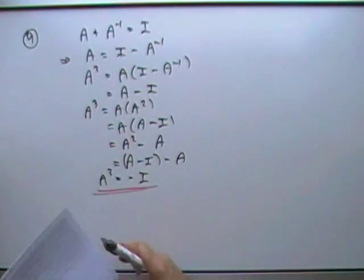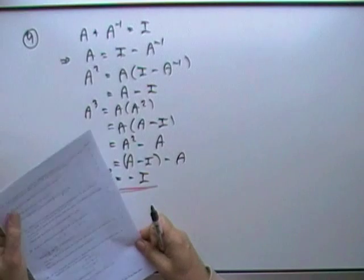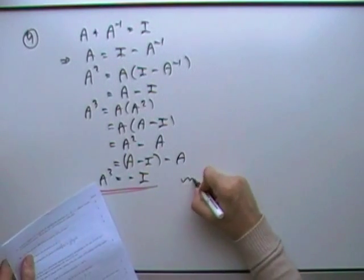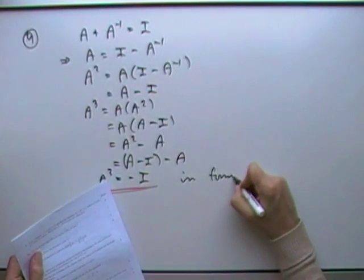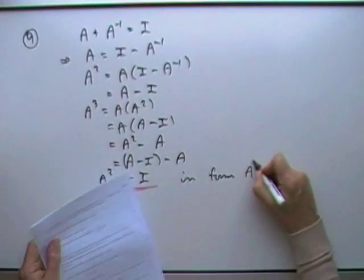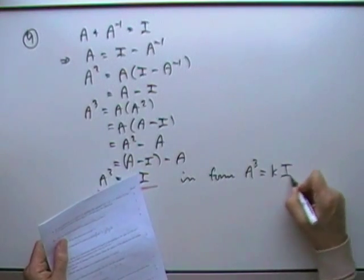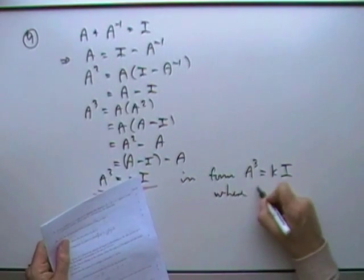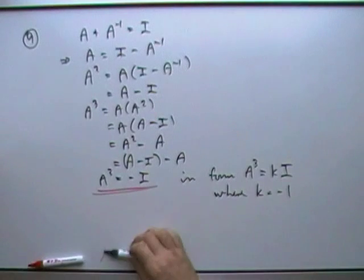Now, how does it want the answer expressed? Show that — I always choose to do something like this. That's in the form A cubed equals K times I, and it says state where K is negative one.